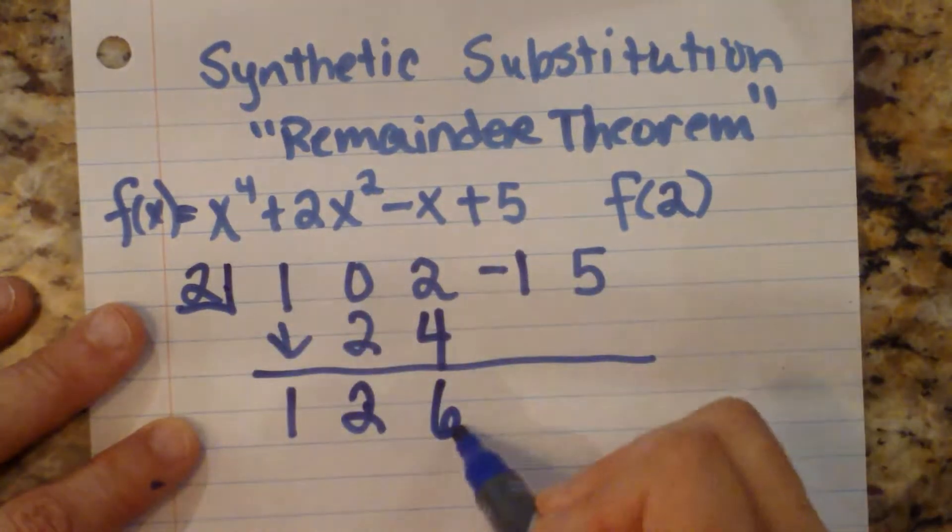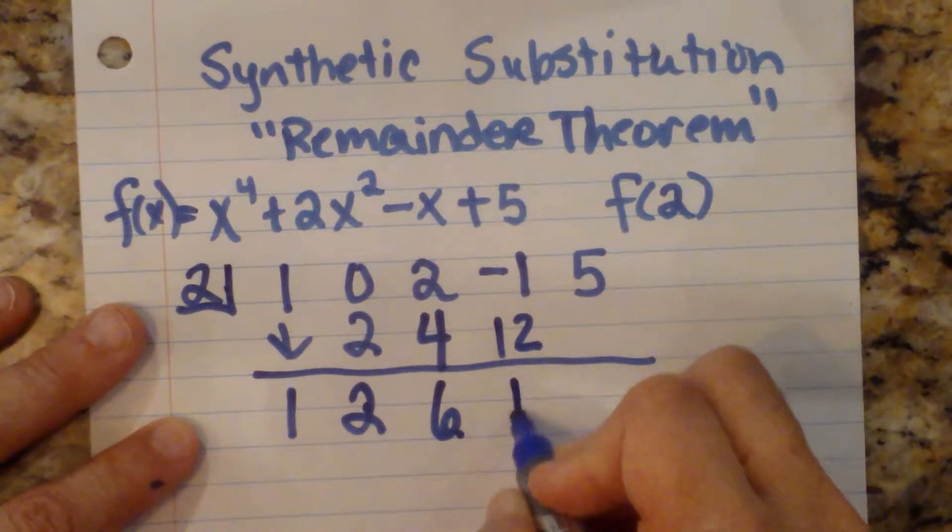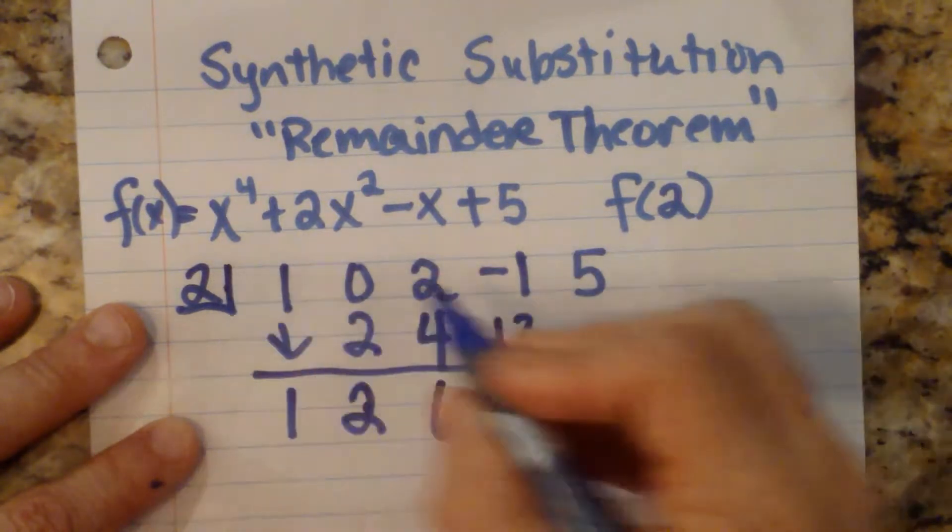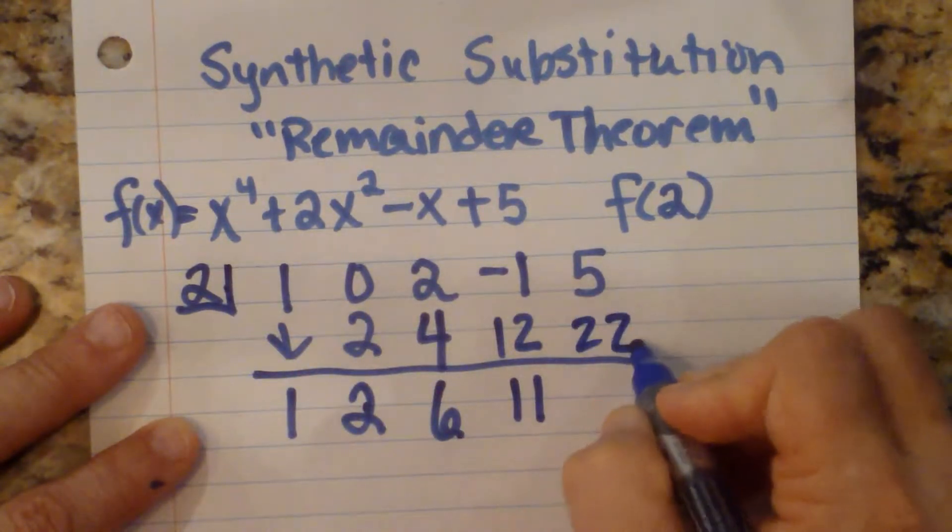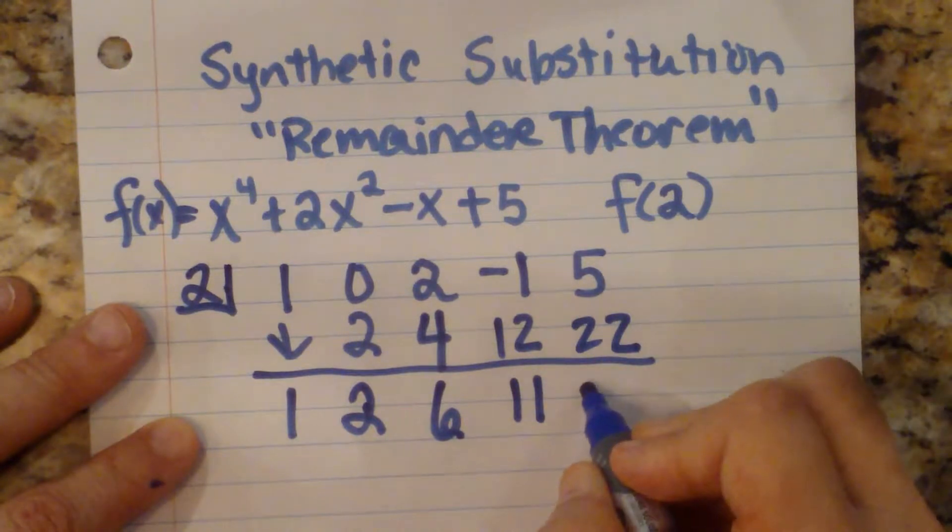We're going to multiply to get 12. We're going to add the column to get 11. We're going to multiply the column to get 22, and we're going to add the column to get 27.